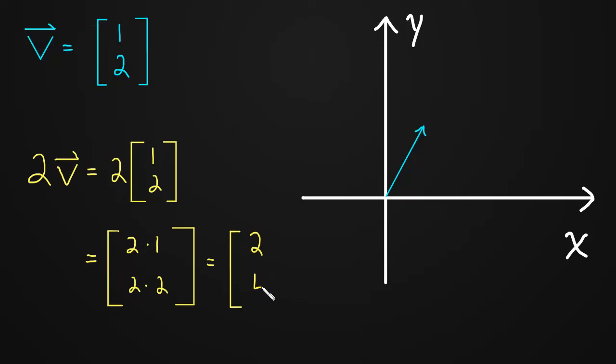The vector 2, 4. And we call 2, this number 2, we call it a scalar multiple, and there's a good reason we call it that, because what it does is it scales the vector.